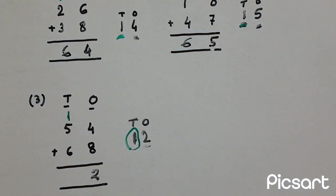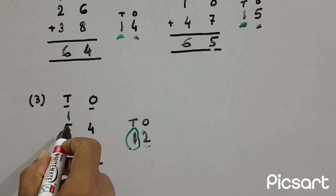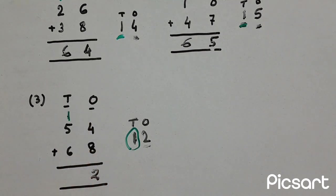So in tens column here, we have six plus five plus one. If we add six plus five, eleven plus one, twelve. So here twelve. So one hundred twenty-two is the answer here.